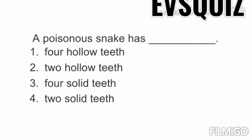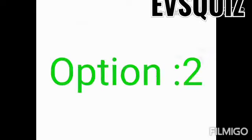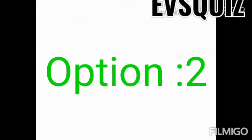The correct answer: a poisonous snake has two hollow teeth. Option number two is the correct answer, yes my dear students.